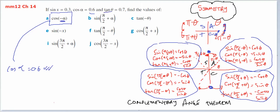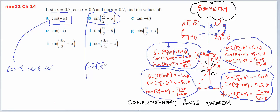In the second one, we're looking at the sine of π/2 plus theta. Here is π/2 plus theta in the second quadrant. Sine is positive in the second quadrant, and it's only equal to cos of alpha. So the sine of π/2 plus alpha equals cos of alpha, which is 0.6.